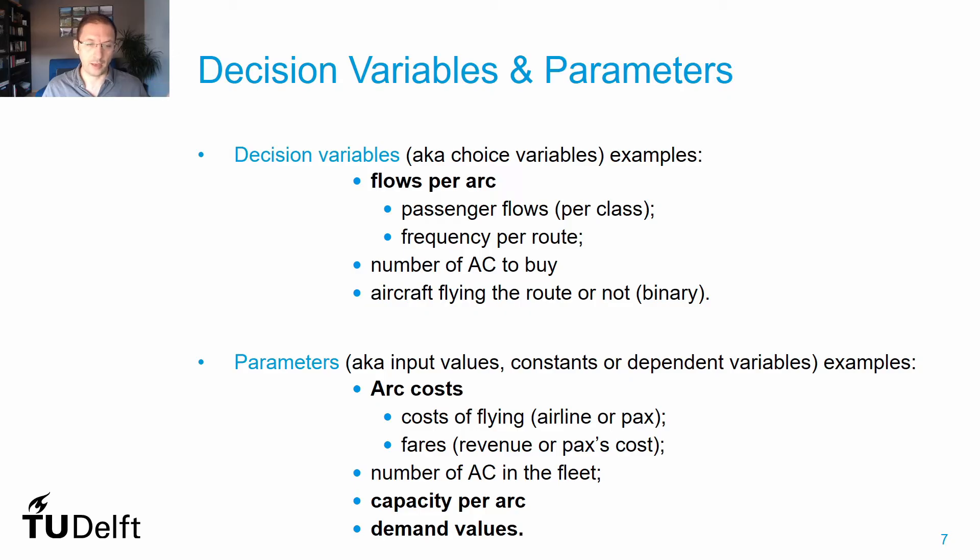Parameters, on the other hand, are known in the beginning. They are quantities that define characteristics, features, or measurable factors that describe our problem. They could be arc costs, the number of aircraft in the fleet, capacity per arc, or many other parameters used to define our problem.